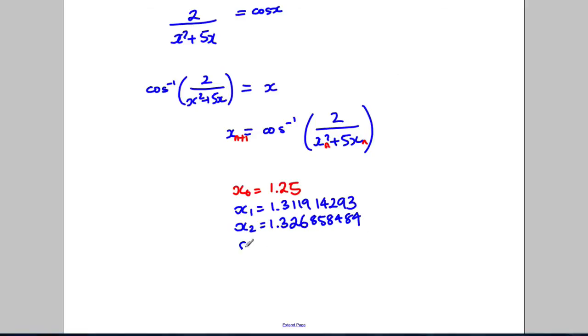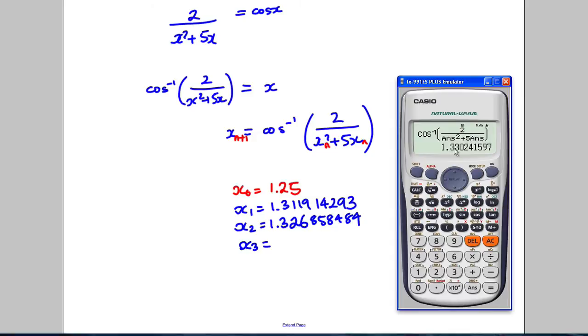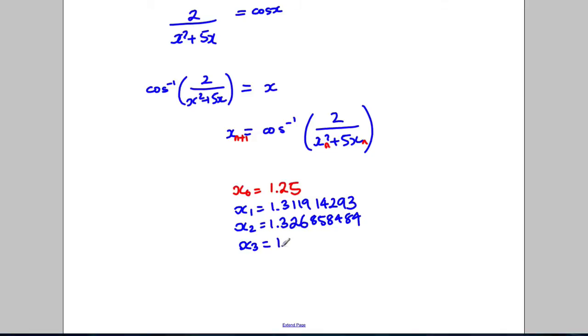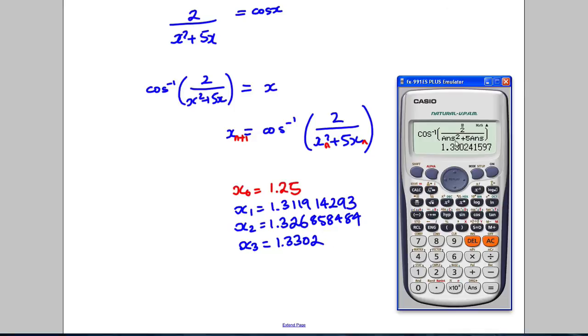And take the calculator again and work at x3. x3 pressing equals one more time. 1.3302. So 1.330241579.